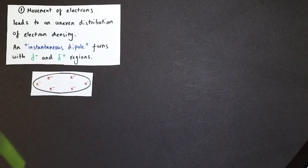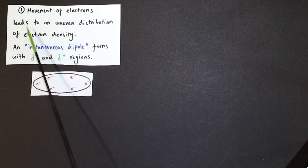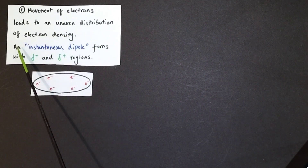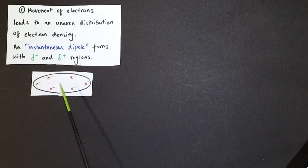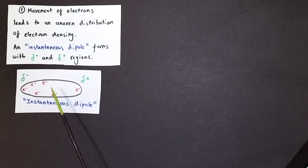If we look at this representation of a molecule, you can see the electron density in this molecule is pretty evenly distributed currently. However, as electrons move around, this will lead to an uneven distribution of electron density known as an instantaneous dipole, with the delta negative region and the delta positive region — slightly negative and slightly positive — as shown in the new representation here.